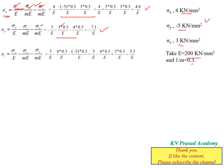The strain in the z direction, εz = σz/E − (1/m)·σx/E − (1/m)·σy/E. Substituting all values, we get εz = 3.3/E. The volumetric strain εv = δV/V equals the sum of strains in x, y, and z directions, that is εv = εx + εy + εz.